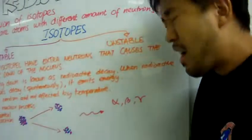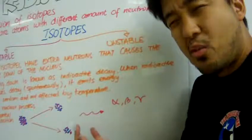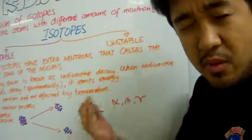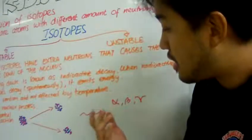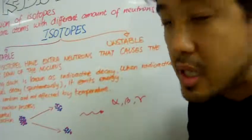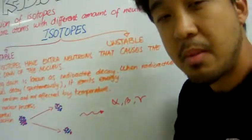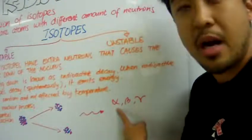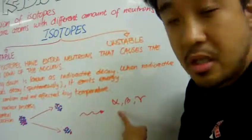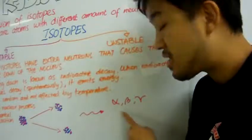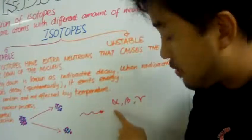Now, remember when I talked about when things break down and emit energy? This energy comes in forms of radiation. This is known as nuclear radiation. Now, nuclear radiation comes in several forms. Some of it, like alpha particle radiation or beta particle radiation. These are Greek symbols for alpha and beta.